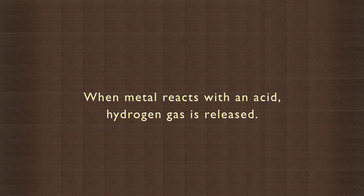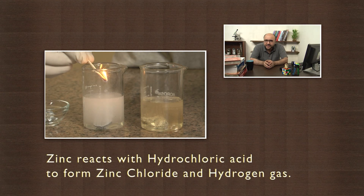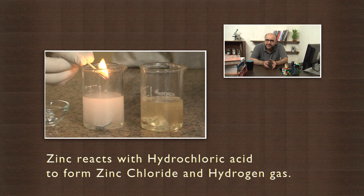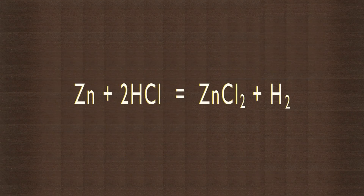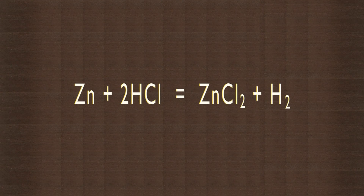So when a metal reacts with an acid, hydrogen gas is released. In the first case, zinc combines with hydrochloric acid to form zinc chloride and hydrogen gas: Zn + 2HCl → ZnCl₂ + H₂.